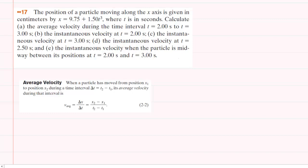In part A, in order to calculate the average velocity between 2 seconds and 3 seconds, we use the following definition of average velocity. We simply take the position at time 2 and subtract the position at time 1, and then divide that by the value of time 2 minus time 1.